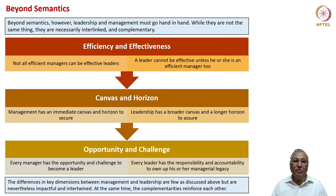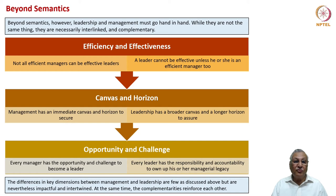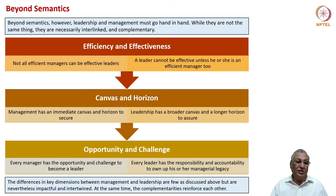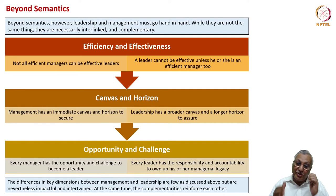The second apparent semantic difference relates to canvas and horizon. Management has an immediate canvas and horizon to secure, while leadership has a broader canvas and longer horizon. The first horizon is existing business, which managers are focused on. The second horizon is emerging business, and the third is futuristic business. The emerging business shows promise while the existing business provides funding; the futuristic business promises transformation but carries huge risk. Short-term management actions to secure the bread-and-butter business are important for leadership to execute on emerging and futuristic horizons — these three verticals are actually interrelated.